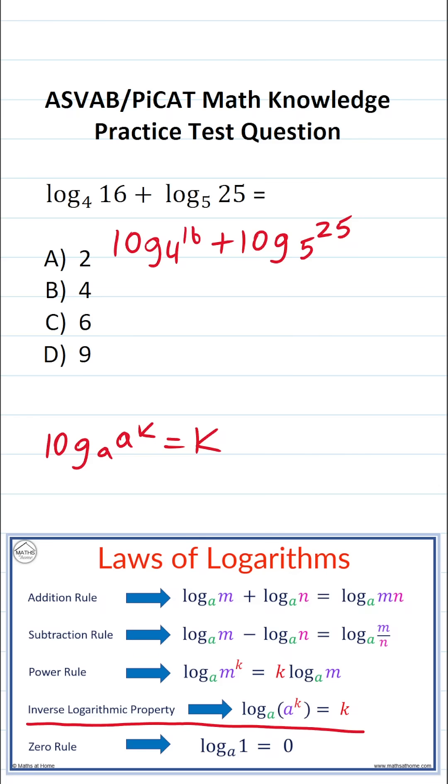So in other words, I'm going to try to rewrite log base 4 of 16 and log base 5 of 25 such that I can use the inverse logarithmic property to simplify this one.